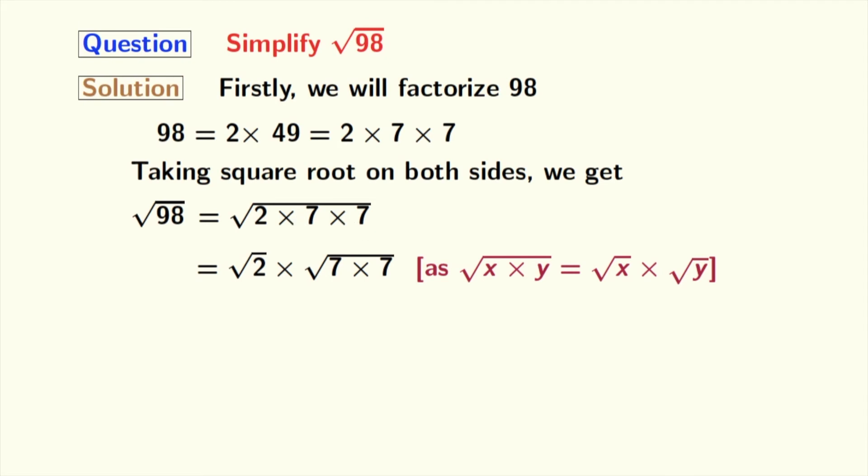Now, our first square root, that is square root of 2, remains the same. And from the second square root, we get 7. In the second square root, we have used the rule that square root of a times a equals a. Here, a is 7. So finally, we get 7 root 2 as our answer.